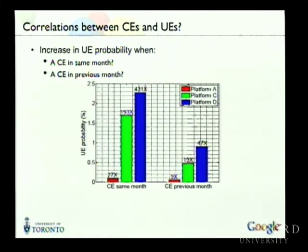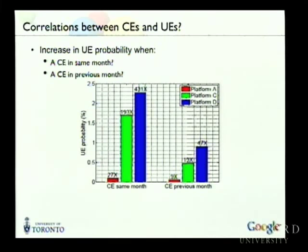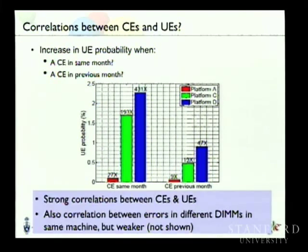The more interesting question is how correctable and uncorrectable errors correlate. If a correctable error is predictive of an uncorrectable error, you could react early. If you compare the probability of seeing an uncorrectable error in a month where there was a correctable error versus a random month, the probability is greatly increased — by factors of 200 to 400. The overall probabilities are still pretty low though, between half a percent and two percent, so it may not be fine-grained enough to trigger replacement on its own. What you'd really want is address information: if an address repeatedly has errors, that's clearly a hard error and creates potential for uncorrectable errors in the future.